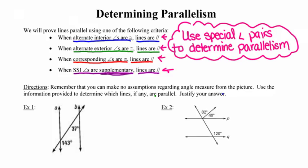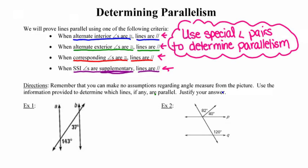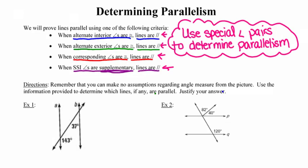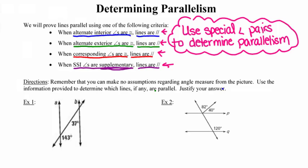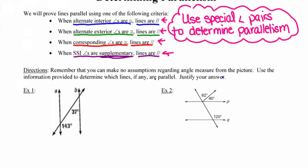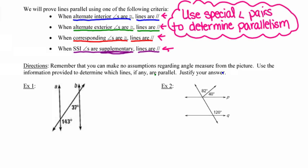Let's go ahead and get this started. In example one, we're given that picture, and we're reminded in the directions that we can't make any assumptions regarding angle measure just by the way something looks in the picture. We're allowed to only use the information provided to us to determine the lines, if any, that are parallel. I'm going to look at the angle measures in this first example and see if I can apply one of those four criteria at the top. If it matches one of those four criteria, we know the lines are parallel.